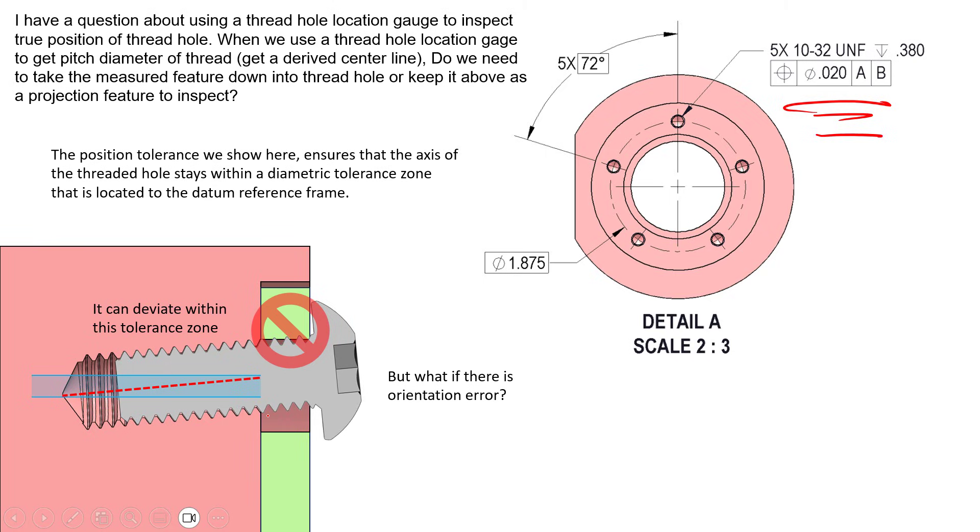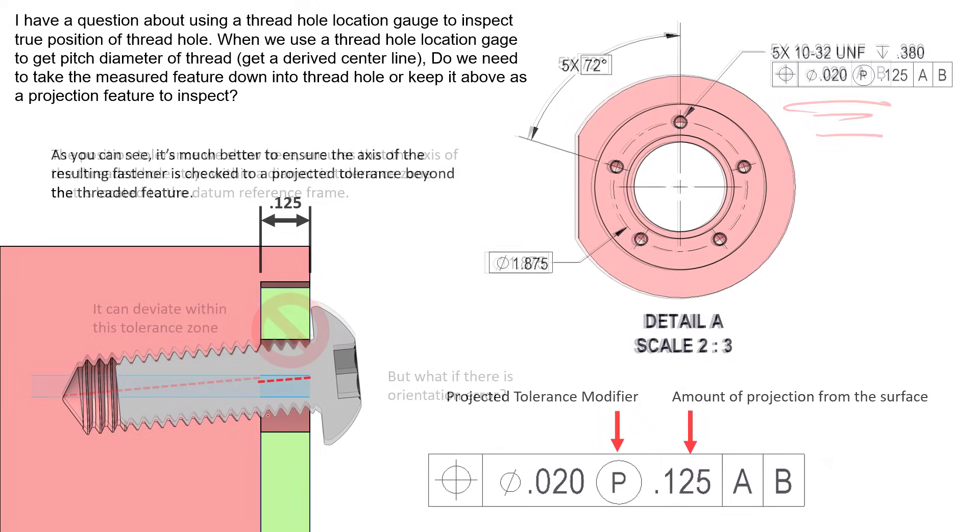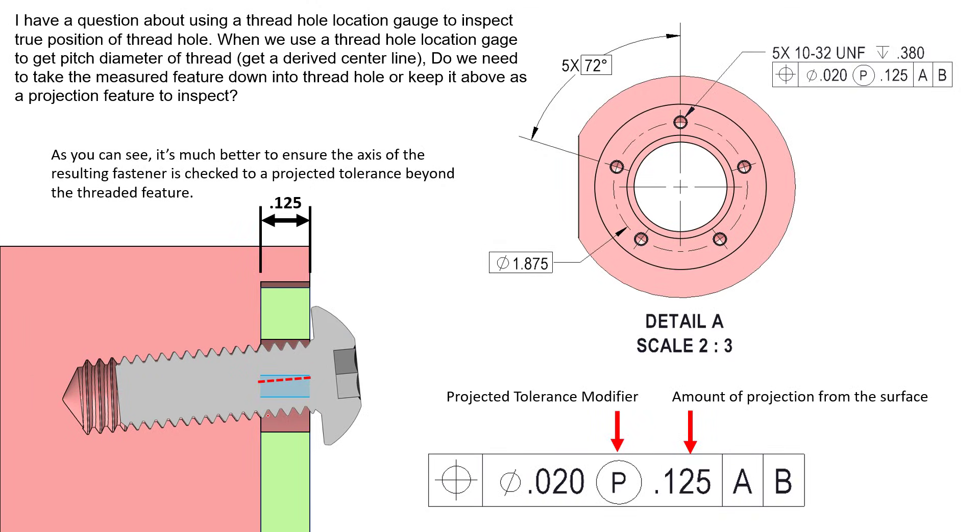But the fastener and the way it acts is definitely something we probably care about. If that's the case, we want to make sure that we include projection in this specification for this control. If we would like to control that portion of the axis, we can simply use the projection tolerance modifier. We still have the same tolerance zone and we make sure that we're projecting the axis above the surface a certain value. If you're selecting this value, this value is often the depth of the clearance hole, because you want to make sure that this amount of the axis projected above this surface by this distance is going to be within our tolerance zone.